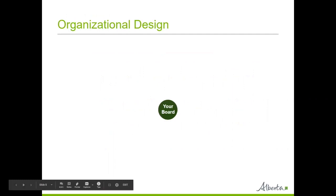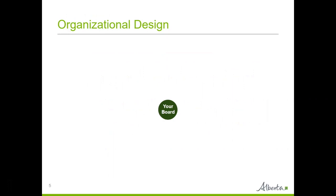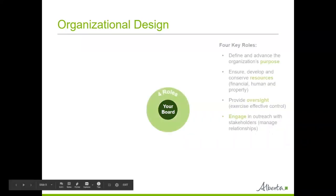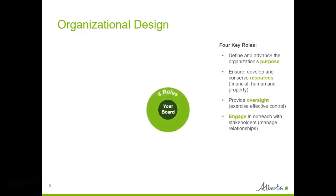At the center of the organization is the board of directors. The board has the highest level of decision-making in the organization — the board basically decides what work will be done. Only the board has the authority and the responsibility to make decisions on behalf of the organization. The first thing the board does is ensure that four key roles are fulfilled. The first role is defining and advancing the organization's purpose, which is very related to the topic of this video.